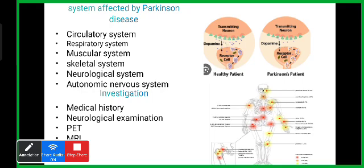A PET scan — positron emission tomography — is used to assess the activity and function of brain regions involved in movement. It may also be used for many different conditions. An MRI is also performed to identify the presence of brain regions that may cause or contribute to Parkinsonism.